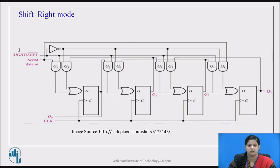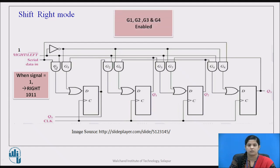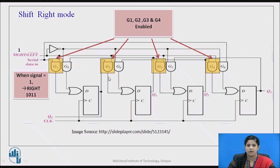Now we will see the shift right mode. Here we select the right-left bar signal as 1, which allows the circuit to act in right shift mode. Let us take an example: we have to display the output 1011, meaning Q0 will be 1, Q1 will be 0, Q2 will be 1, and Q3 will be 1. Setting right-left bar to 1 enables gates G1, G2, G3, and G4. Since an AND gate acts as an enable circuit when one input is high, the output of each AND gate will be whatever is given to the second terminal. The output of these enabled AND gates carries the incoming serial data.